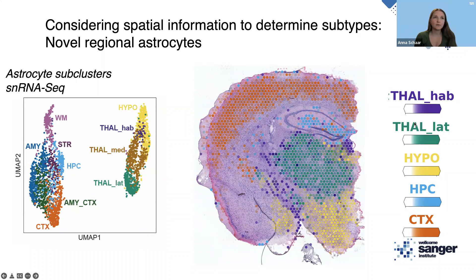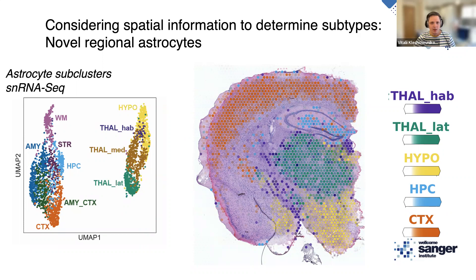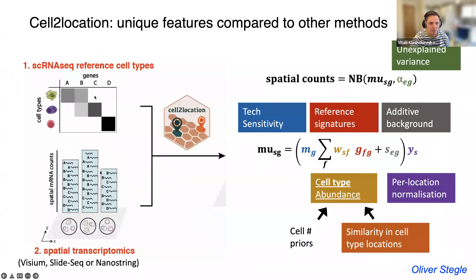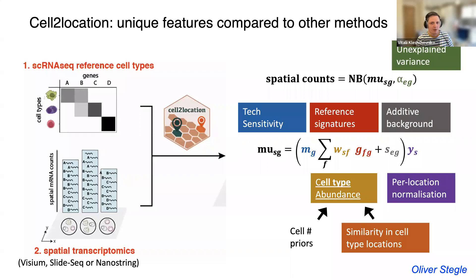The second question: do you necessarily need a priori cell type annotation to run cell2location? In terms of using the method, yes — you have to provide cell2location with information about which genes are expressed by every cell type, because otherwise the model wouldn't know what cell types look like. There have been related proposals for de novo decomposition without a reference, but I think that reduces interpretability. For now, you have to use a reference.